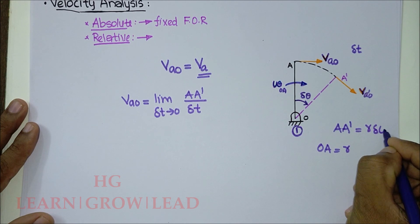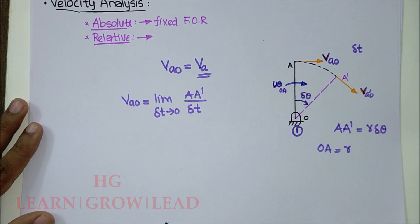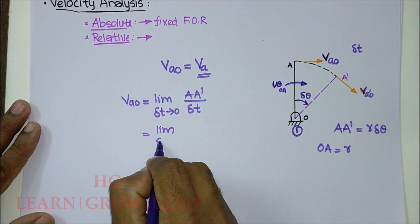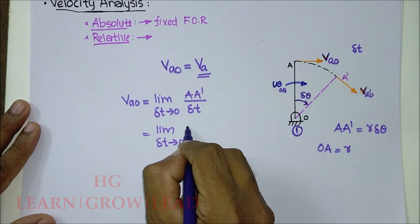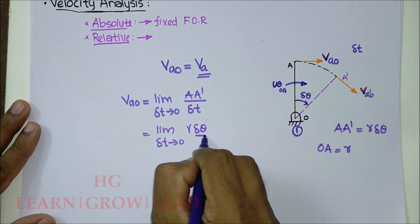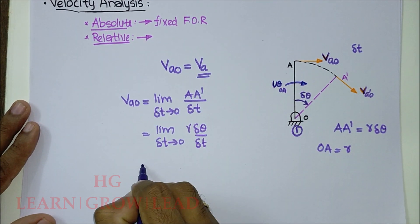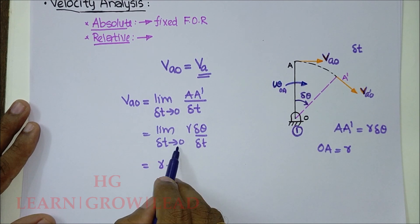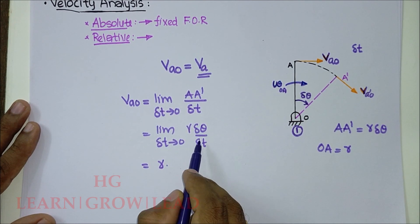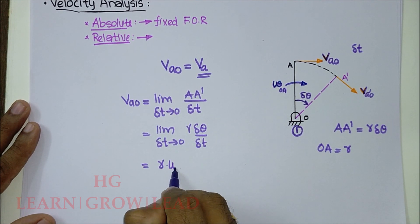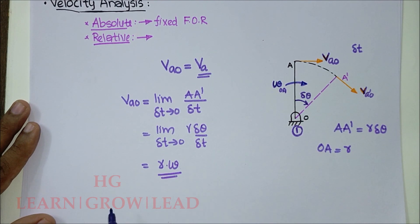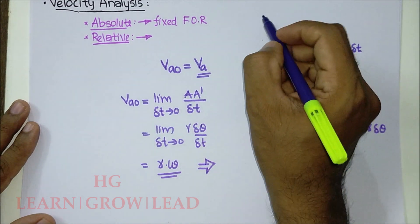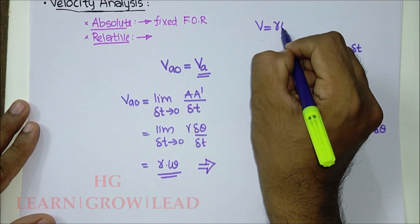The arc length is r times delta-theta, so the velocity equation becomes the limit as delta-t tends to zero of r·delta-theta divided by delta-t. Since r remains constant, this gives r times the limit of delta-theta over delta-t, which is omega. So the velocity equals r·omega.